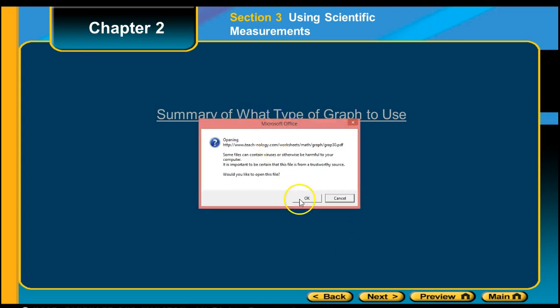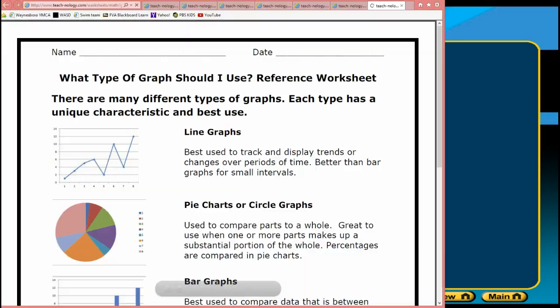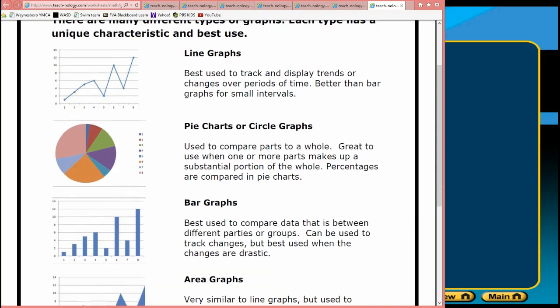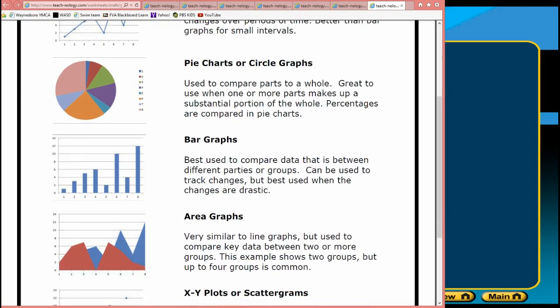So let's look at a summary of what graphs to use when. A line graph is good to track and display trends over periods of time. These are better than bar graphs for small intervals. Pie charts are good when you're looking at the parts of a whole. Bar graphs are good to compare data that is between different parties or groups. It can be okay to track data changes, but it's best when the changes are drastic.